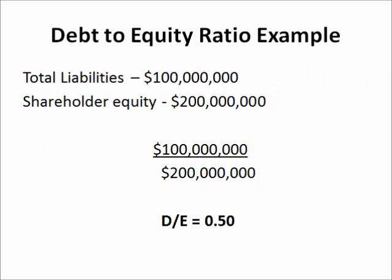Using a simple example of how figuring out this ratio would look: we have total liabilities of, let's say, $100 million, and shareholder equity of $200 million. The equation is total liabilities divided by shareholder equity, so in this case that's $100 million divided by $200 million, and we get a ratio of 0.5. In other words, there's half as much debt financing the operation as there is equity. This number is significant in a couple of ways, which we are about to discuss.